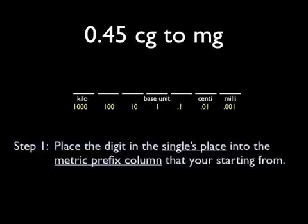Step 1 is to place the digit in the singles place into the metric prefix column that you're starting from. Go ahead and identify what's in the singles place of the number 0.45. Good, it's the zero. It's always the number just to the left of the decimal place.